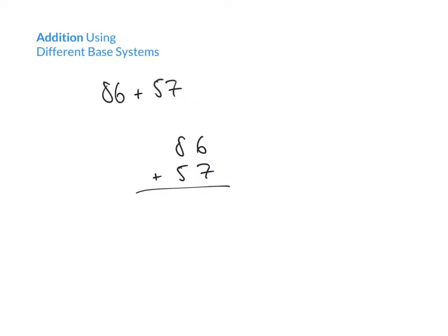When we previously talked about different number systems including the decimal system, we said that there are only certain permissible digits. In the decimal system the only permissible digits are 0 to 9, so our result of 13 doesn't fit. We're only allowed a digit of 0 to 9 in this column, and so what we have to do is carry a number to the next column.